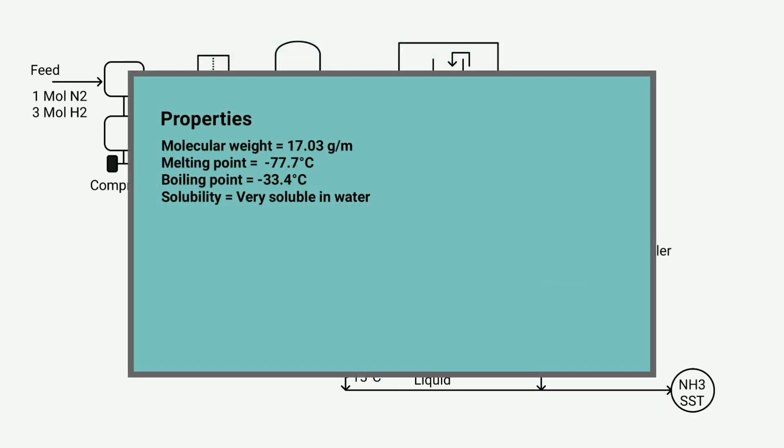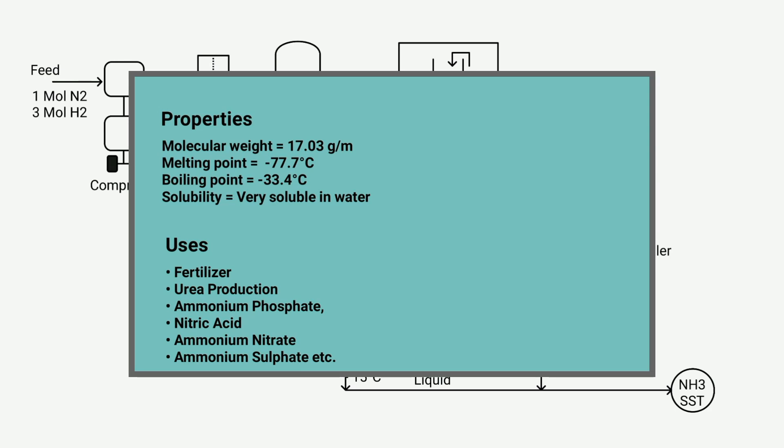The molecular weight of ammonia is 17.03 grams per mole. Its melting point is minus 77.7 degrees Celsius, its boiling point is minus 33.4 degrees Celsius, and it dissolves well in water. It is used to make fertilizers, urea production, ammonium phosphate, nitric acid, ammonium nitrate, ammonium sulfate, etc.